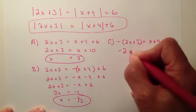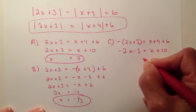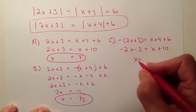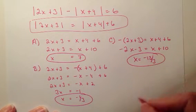We get negative 2x minus 3 equals x plus 10. If I continued this down, I would get x equals negative 13 over 3. Just trust me on that one.